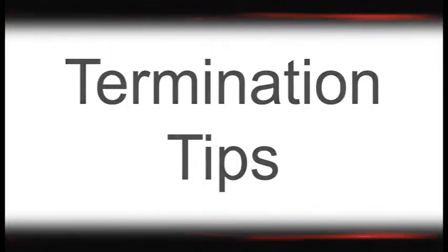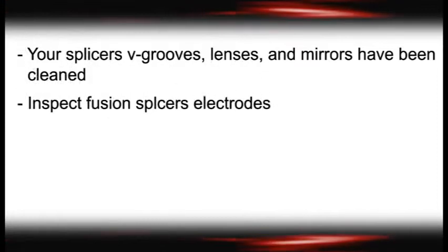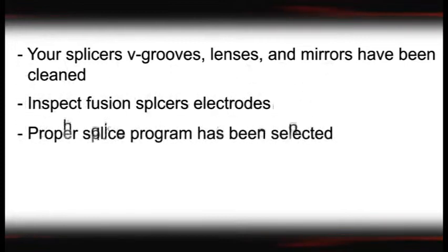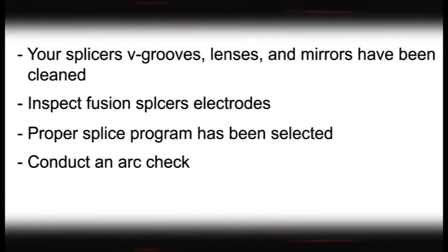Finally, let's review a few items to check on our fusion splicing equipment before we begin. This will help to reduce any poor terminations that may occur during the fusion splicing process. Make sure that the fusion splicer's V-grooves, lenses, and mirrors have been cleaned according to the manufacturer's instructions. Dirt, debris, or dust will adversely affect the ability of the fusion splicer to function properly. The fusion splicer's electrodes have been inspected and are within the manufacturer's specifications. The proper splice program has been selected for the fiber to be spliced. The arc check has been conducted to ensure a properly calibrated machine for the current field conditions.